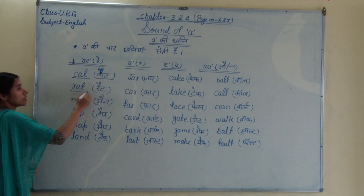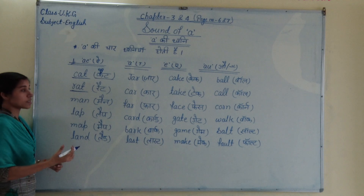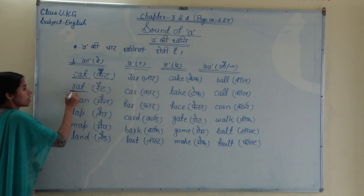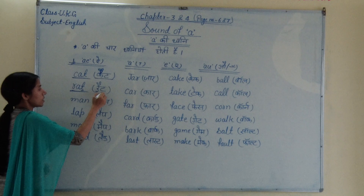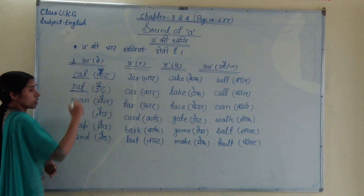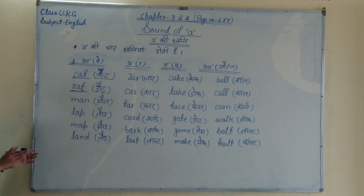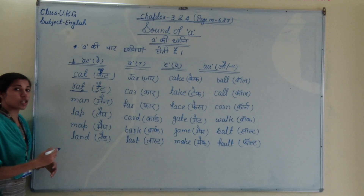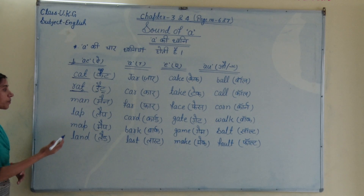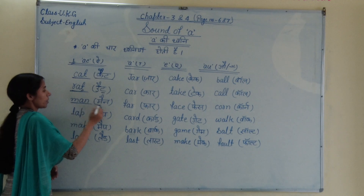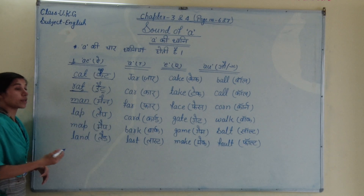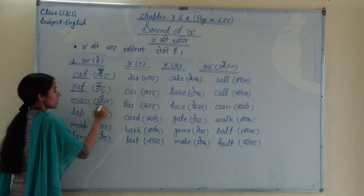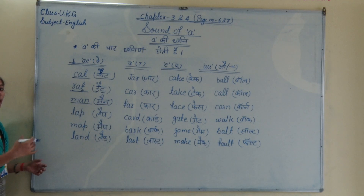Phir second hain akka: rat. Rat — ismein 'a', r se 'ra' hogaya, t se 'term' hogaya. To 'a' ka ucchaaran kya hora hai yahan? Short hota hai. To yahan rat, isko ucchaaran kaise karte hain — rat. Phir hai akka: man. Man — ismein bhi 'a' ka ucchaaran, a ki rupi hora hai — man.